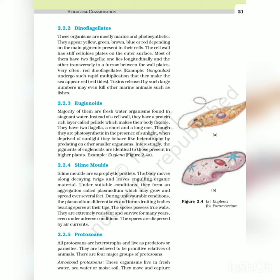Euglenoids - majority of them are freshwater organisms found in stagnant water. Instead of a cell wall, they have a protein-rich layer called pellicle which makes their body flexible. They have two flagella, a short and a long one. Though they are photosynthetic in the presence of sunlight, when deprived of sunlight they behave like heterotrophs by predating on other smaller organisms. Interestingly, the pigments of euglenoids are identical to those present in higher plants. Example: Euglena, Figure 2.4.